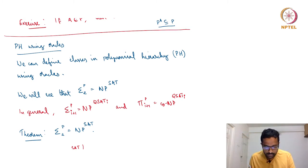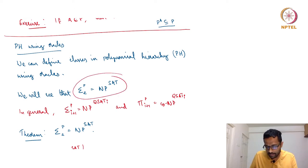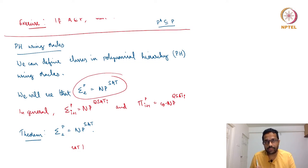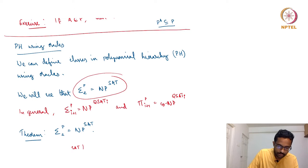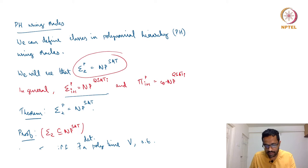We can define these classes using Oracle Turing machines. What we will see in today's lecture is that Sigma_2 is the same as the class NP with access to a SAT oracle: Sigma_2 equals NP^SAT. In general, what is true is that Sigma_i is NP with access to a QSAT_i oracle.